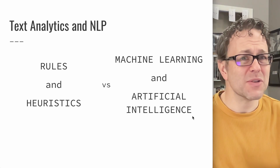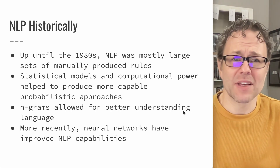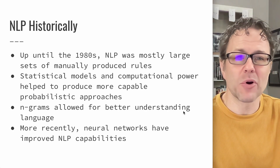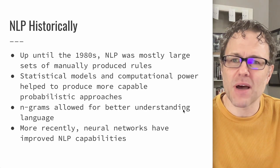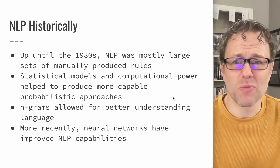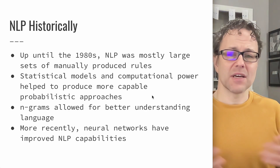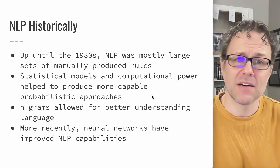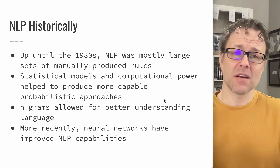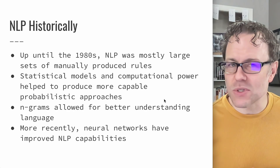Nowadays we're using a lot more machine learning and AI in natural language processing. Historically, there were many manually created, hand-programmed rules built over time. Then statistical models and increasing computational power allowed researchers to create more capable probabilistic approaches to understanding text. N-grams were a development where you take a sequence of n words — if you look at a single author's book, you can identify sequences of words and very easily predict the next word or understand where a sentence is going based on that writer's style.